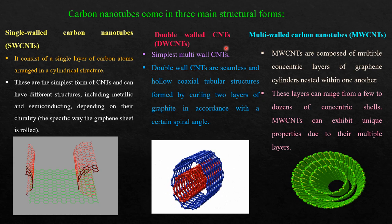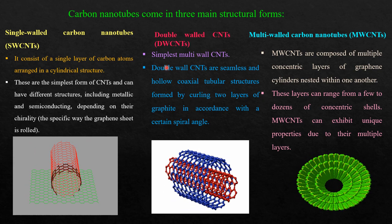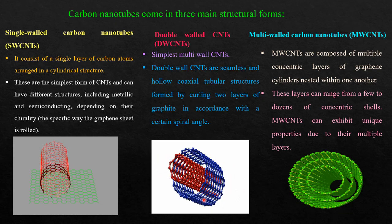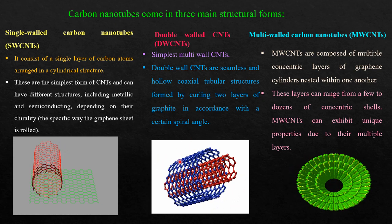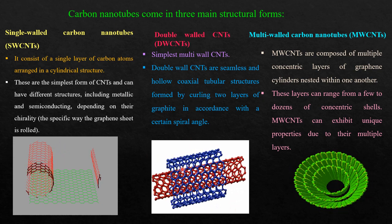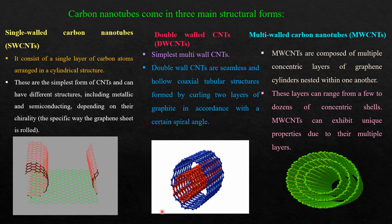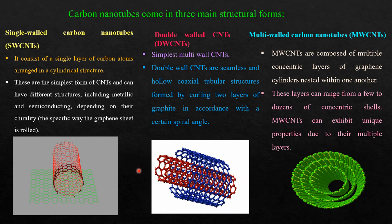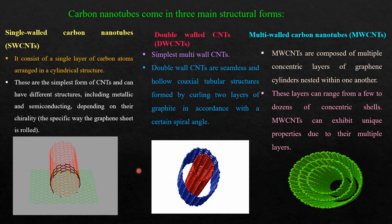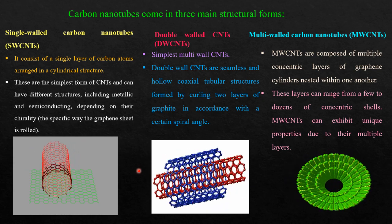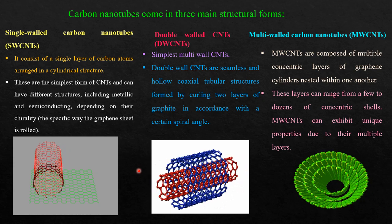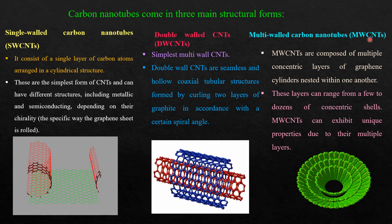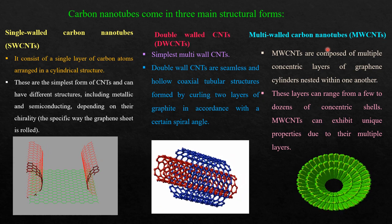Another type is double-walled carbon nanotubes, which are the simplest multi-walled carbon nanotubes, comprising two layers — two graphene sheets rolled up in this form. Double-walled carbon nanotubes are seamless and hollow coaxial tubular structures formed by curling two layers of graphite in accordance with a certain spiral angle.